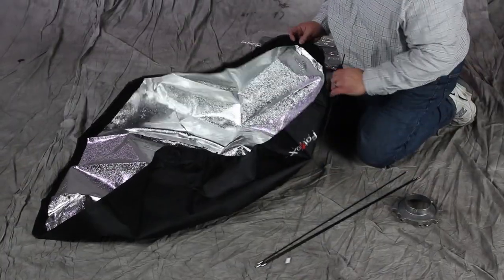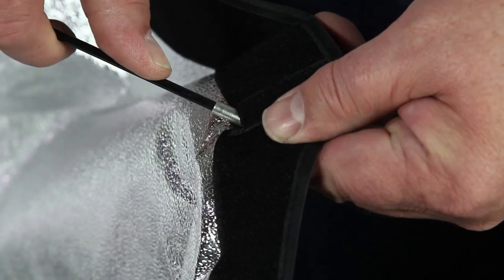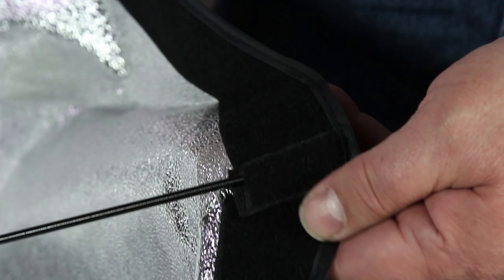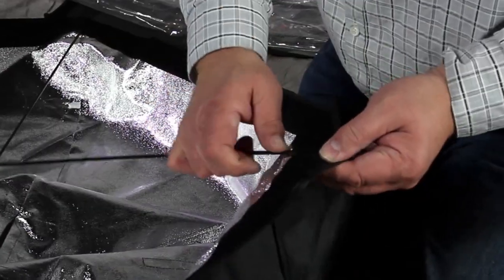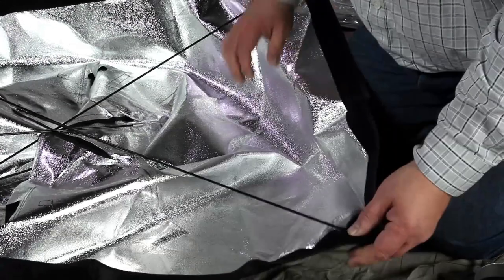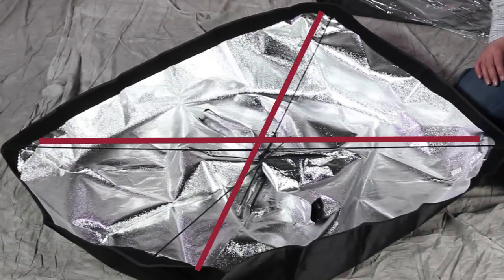Grab one of the four softbox rods. Locate the smaller end of the rod and slide it into the fabric pouch on one of the four corners of the softbox. Slide three more rods into the corners of the softbox. When you're done, your softbox should look like this, with the four rods making an X pattern.